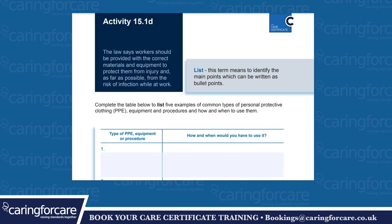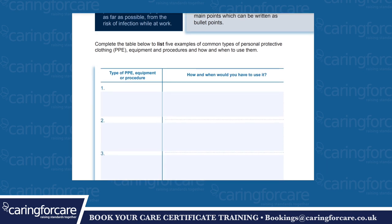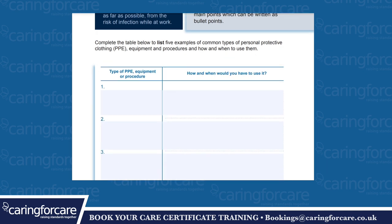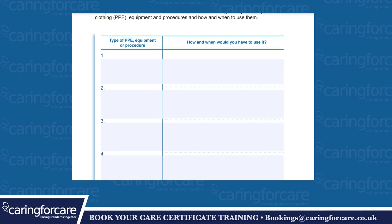Activity 15.1d. The law says workers should be provided with the correct materials and equipment to protect them from injury and as far as possible from risk of infection while at work. The term 'list' means to identify the main points, which can be written as bullet points. Complete the table below to list five examples of common types of PPE — personal protective clothing or personal protective equipment — and procedures, and how to use them. The table headings are: type of PPE, equipment or procedure; and how and when would you have to use it?